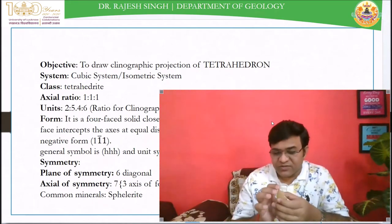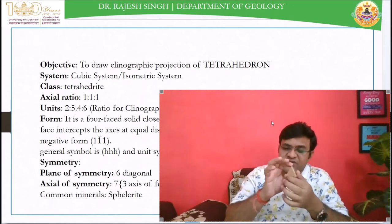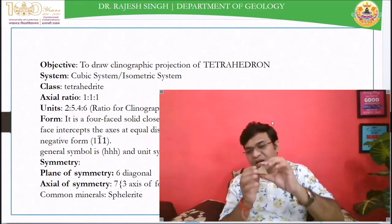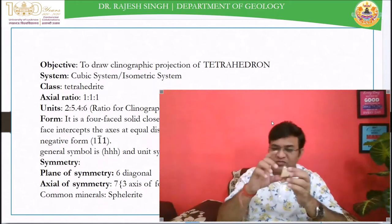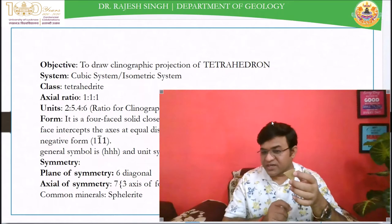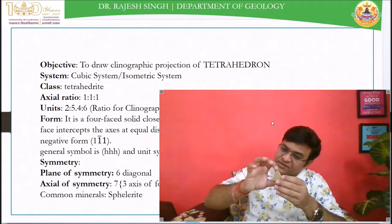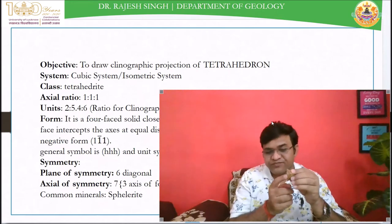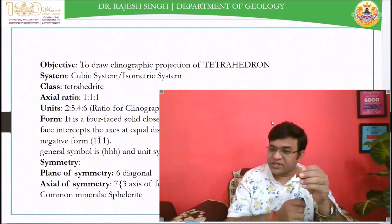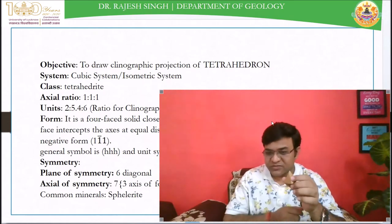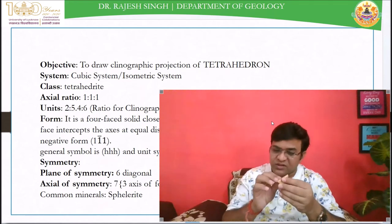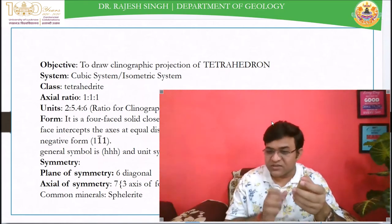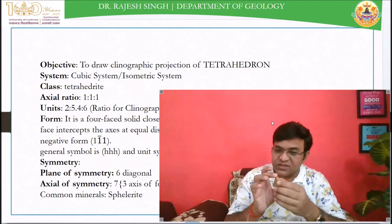Now I am going to discuss the symmetry elements. You can hold it like this — then you have four situations of the same kind. All four apexes: one apex and the center of the opposite equilateral triangle, the line passing through one corner of the tetrahedron and the center of the opposite equilateral triangular face, will give you threefold symmetry. So these are four lines showing threefold rotation. In the cubic system, the crystallographic axes are only three, so these are the diagonal axes.